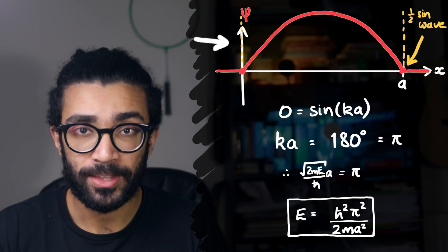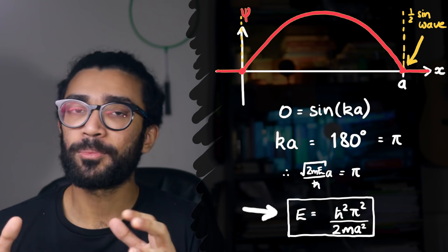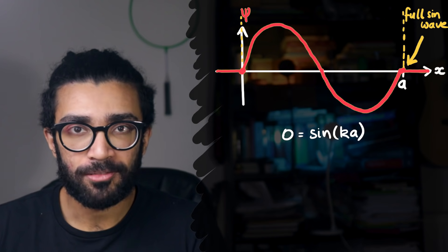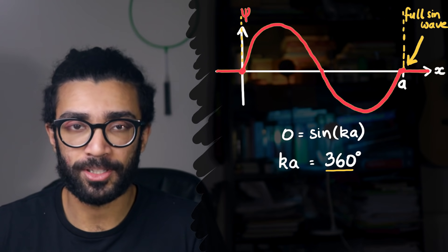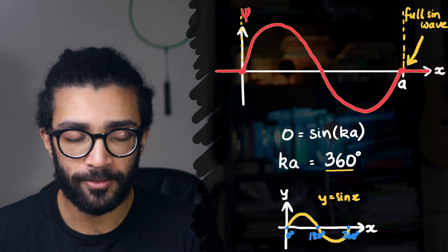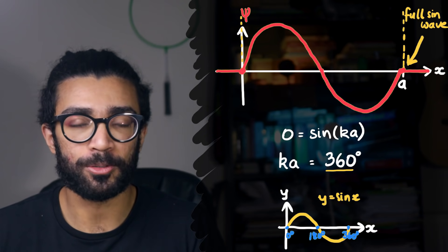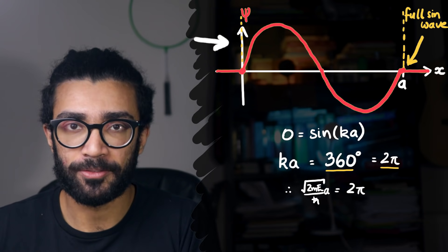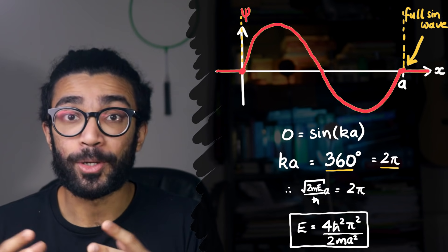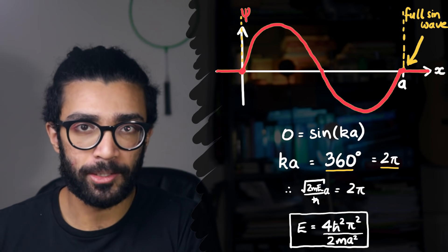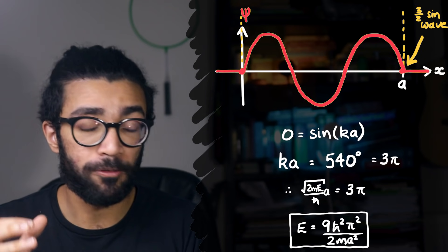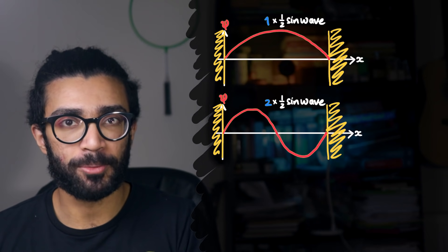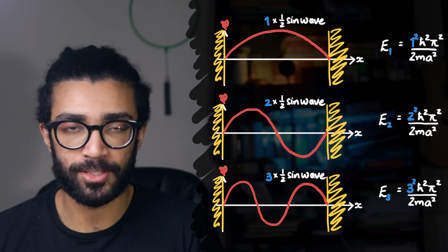In other words, if our wave function looks like this, then the energy of a particle is this. Another possible solution is a full sine wave fitting into this region. So this time, at the wall on the right, the value in our brackets must now be equal to 360 degrees, right? Because we've gone through an entire sine wave. And 360 degrees is equal to two pi radians. Therefore, we found that if the wave function looks like a whole sine wave, then the energy of the particle is this. And we can continue doing this for various lots of half sine waves. So we could have three half sine waves in our region, or four half sine waves in our region, and so on and so forth. And in each case, we can calculate the energy of the particle when its wave function looks like those sine waves.